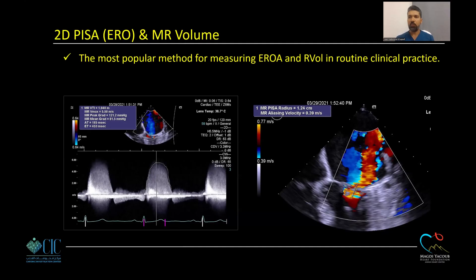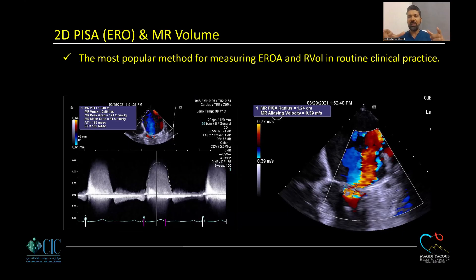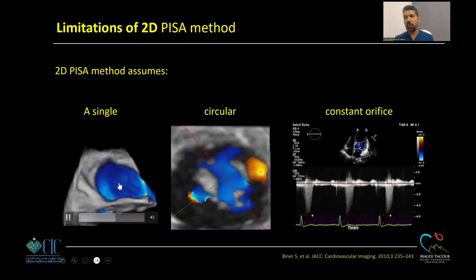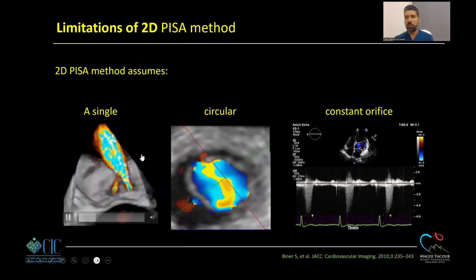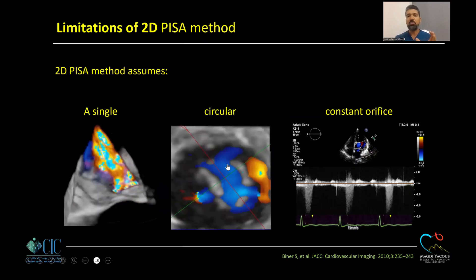The 2D PISA method is the most widely accepted and validated, recognized by most guidelines. But the problem with PISA is, number one, it assumes a circular orifice — it measures the radius of a hemisphere, but the hemisphere assumes a circular orifice, and if the regurgitation orifice is not a circle, this method will not be accurate, which is true in many cases. Number two, the PISA method is not valid for multiple orifices. 2D PISA has not been validated for multiple jets and again assumes a circular orifice.